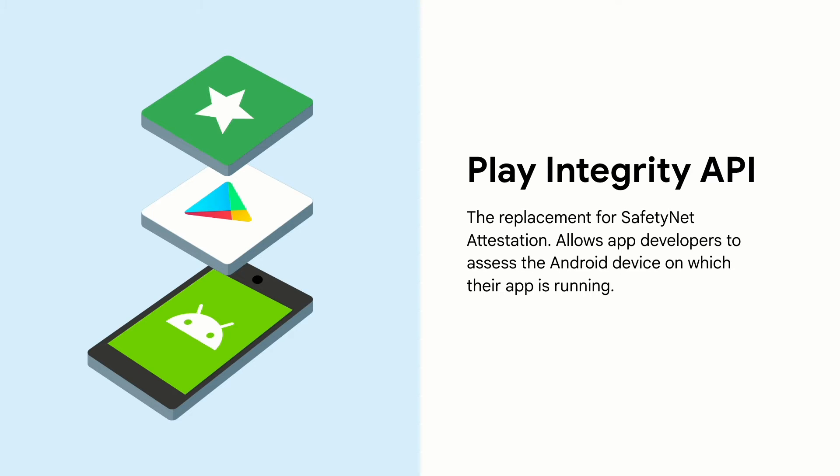Genuine app binary, determining whether you're interacting with an unmodified binary that Google Play recognizes. Genuine Play install, showing whether the current user account is licensed, meaning the user installed the app through Google Play. And genuine Android device, detailing if your app is running on a genuine Android device powered by Google Play services.